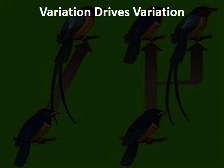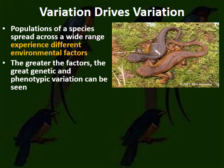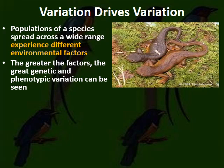Returning to larger creature speciation: populations spread across wide ranges experience different environmental conditions, causing different phenotypes and greater phenotypic variation. The greater the environmental difference, the greater the phenotypic variation. For example, two types of salamanders look almost identical because they live in very similar environments, even though they may be different species.